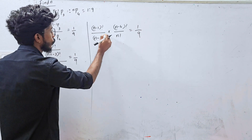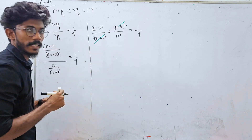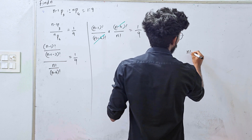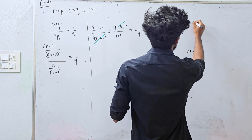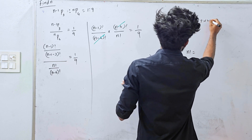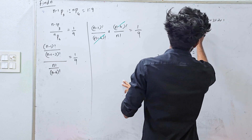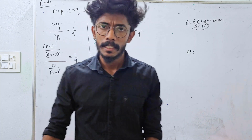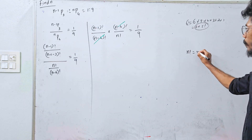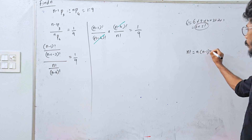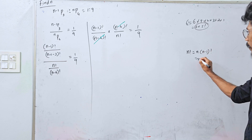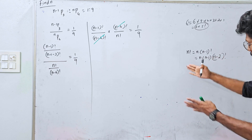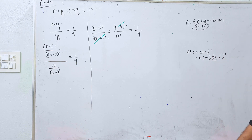Now, n-4 factorial and n-4 factorial get cancelled. I'm going to show you one thing. For example, 6 factorial is 6 into 5 factorial. So n factorial is equal to n into n-1 factorial. The n-1 factorial in the numerator and denominator can be related this way.